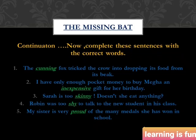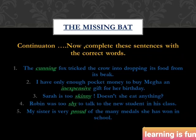The third sentence: 'Sarah is too ______ ' — the answer is 'skinny,' and the comment that follows, 'doesn't she eat anything?', confirms the negative sense. The fourth sentence: 'Robin was too ______ to talk to the new student in his class' — the answer is 'shy,' not 'scared,' as entering a new environment can make you feel shy temporarily. The fifth sentence: 'My sister is very ______ of the many medals she has won in school' — the answer is 'proud,' not 'vain,' because she is feeling proud of genuine achievement. You have to do this exercise in the textbook as well.